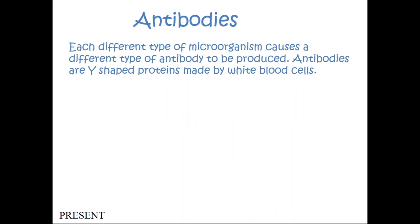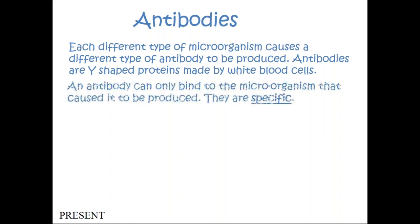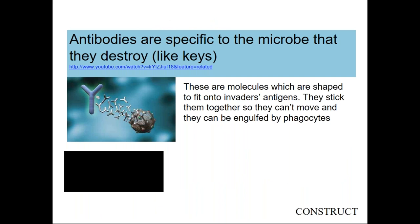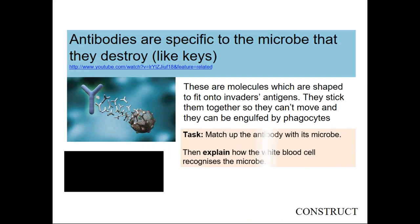Each different type of microorganism can trigger a different type of antibody to be produced. Antibodies are Y-shaped proteins made by white blood cells. An antibody can only bind to the specific microorganism it was produced for — they are specific. Antibodies are specific to the microbes they destroy, like keys. They are molecules shaped to fit onto invaders' antigens, sticking them together so they can't move and can be engulfed by phagocytes.